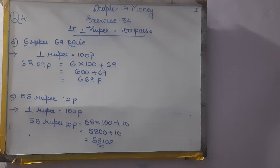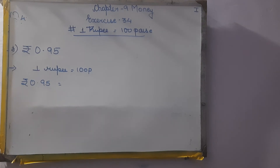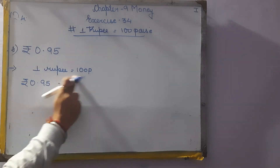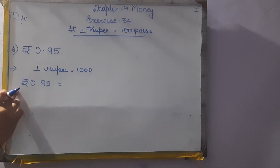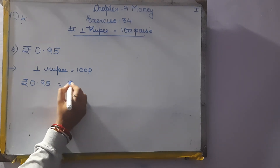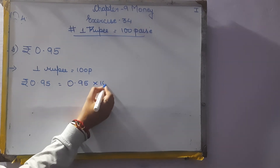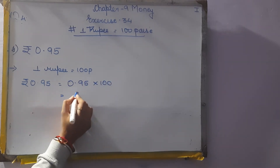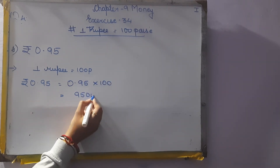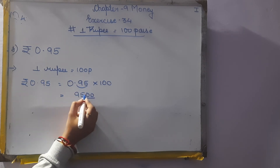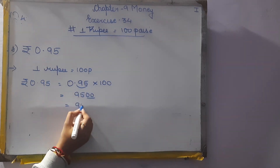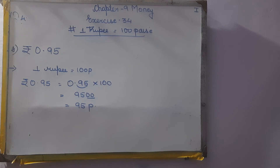G and H mark as homework. Next: rupees 0.95. So 1 rupee is equal to 100 paise. Rupees 0.95 multiplied by 100 equals 95 paise. After the point there are 2 numbers, so leave 2 numbers and put the point — it will be 95 paise. Mark K as homework.